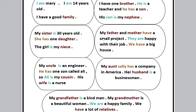My father and mother have a small project - لديهم مشروع صغير. هنا father و mother الاتنين مع بعض plural يعني جمع، عشان كده استخدمنا have مش has. They are happy with their job - هم سعداء بوظيفتهم. We have a big house - أحنا عندنا بيت كبير. استخدمنا have هنا عشان السابجكت we.